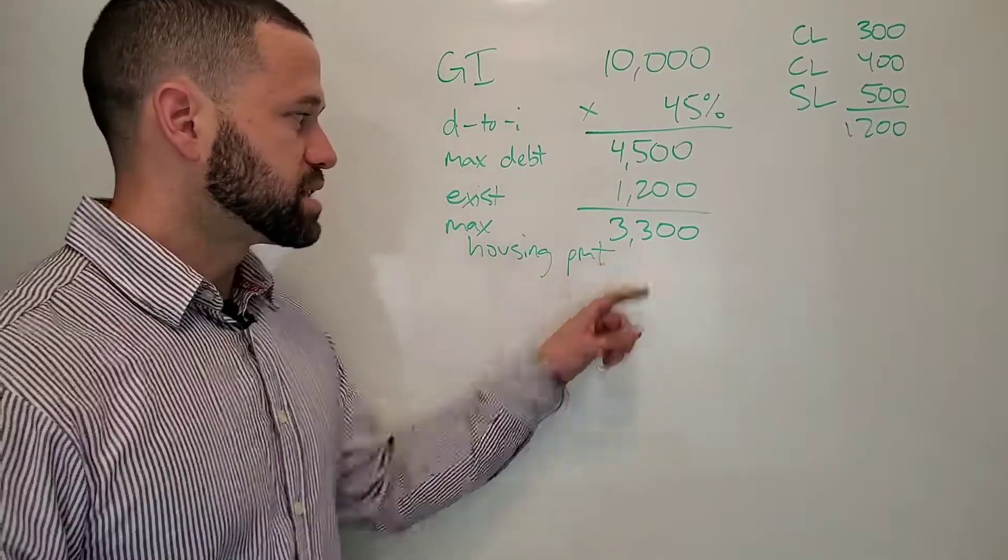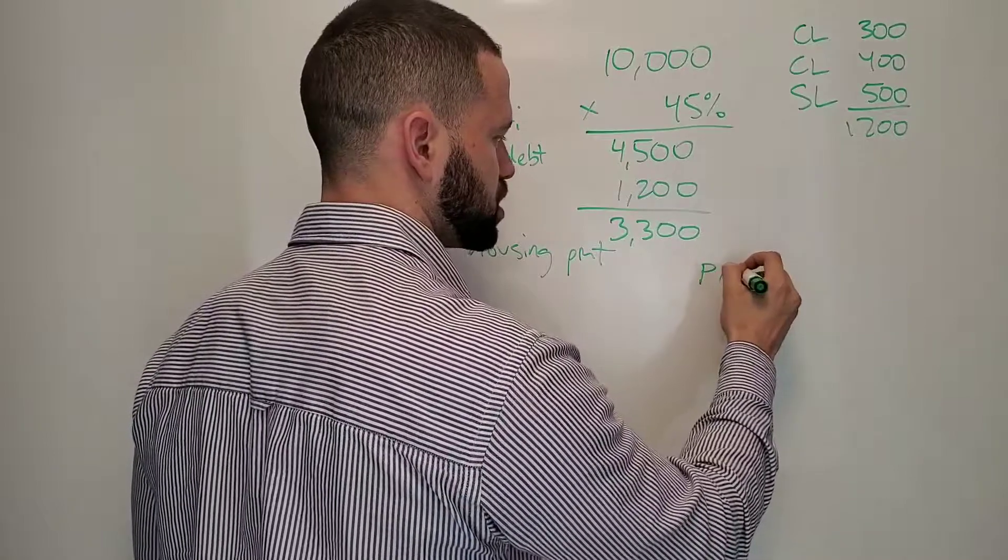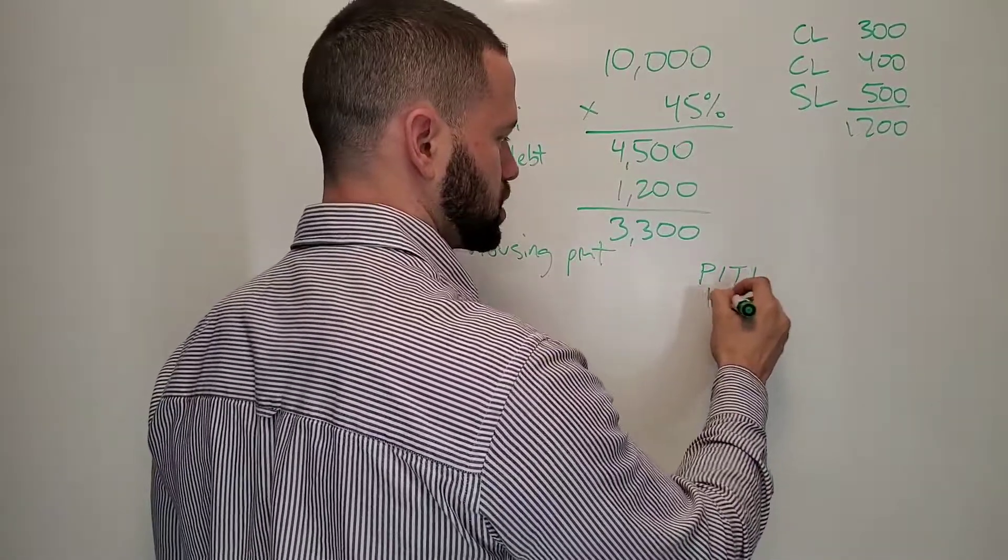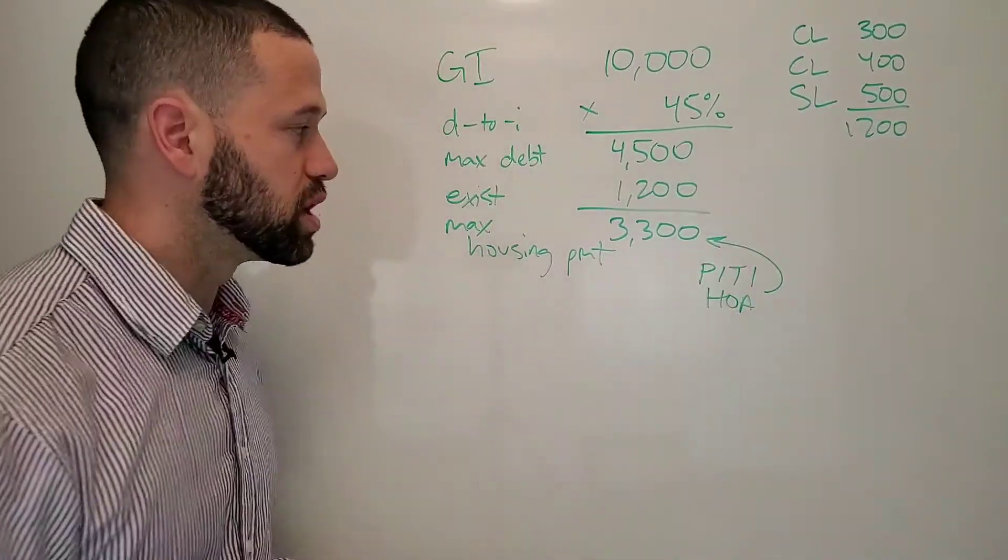Now this has to cover your mortgage, principal, interest, taxes, insurance, HOA dues, everything. Your total payment has to fit into $3,300 per month.